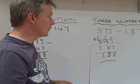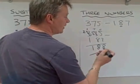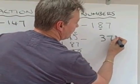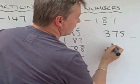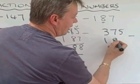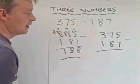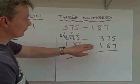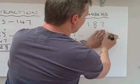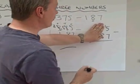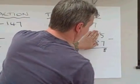So again, I'm going to rewrite that as 375 take away 187. Exactly the same principle. That now becomes 15. So 7 from 15 is 8.